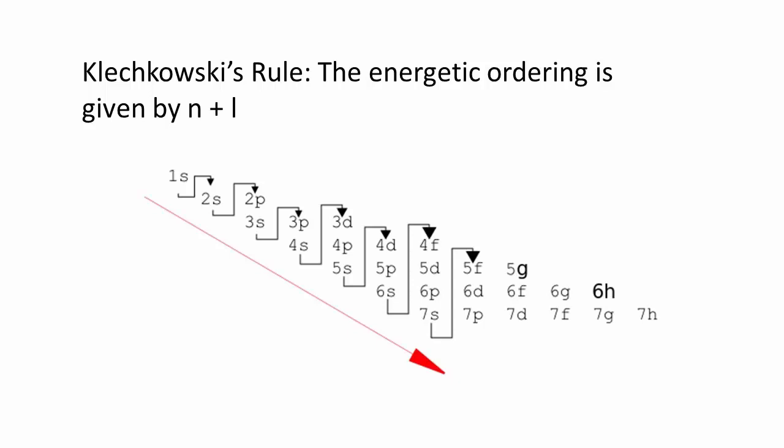If the sum is equal, the orbital with the lower value of n is lower in energy. The energetic ordering of atomic orbitals is thus given by the following.